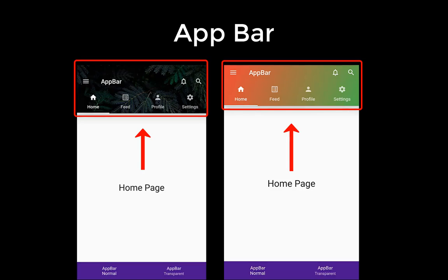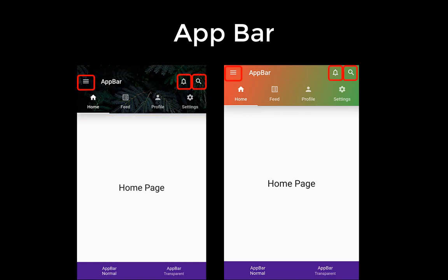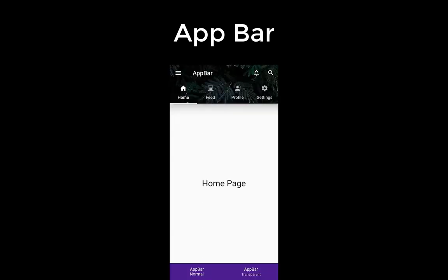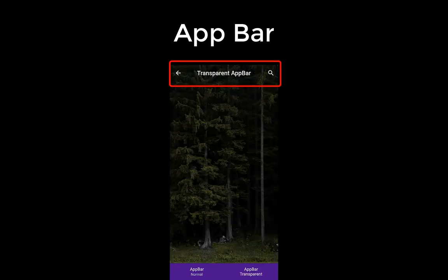The app bar is displayed at the top of the screen. We want to create an app bar with a background image or gradient look, with buttons on the left and right side that you can click on. We will also integrate a tab bar so that you can switch easily between pages, and lastly we will also create a transparent app bar.